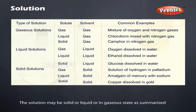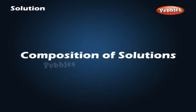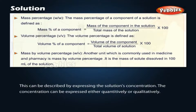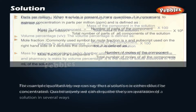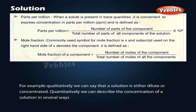The solution may be solid, liquid, or in a gaseous state. The composition of solutions can be described by expressing the solution's concentration. The concentration can be expressed either quantitatively or qualitatively. For example, qualitatively, we can say that a solution is either dilute or concentrated.